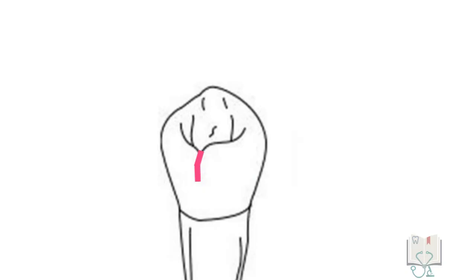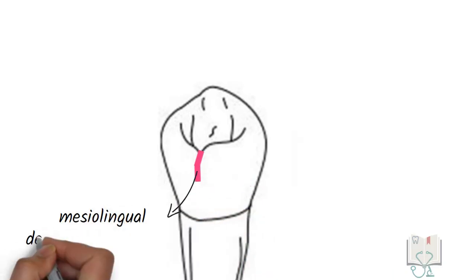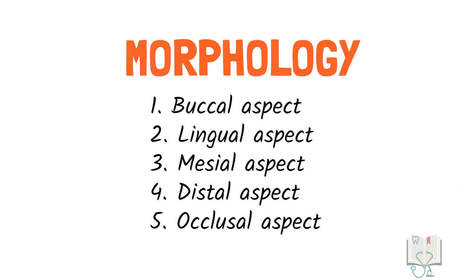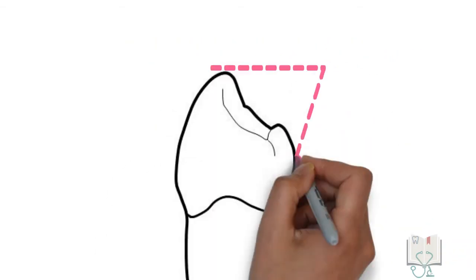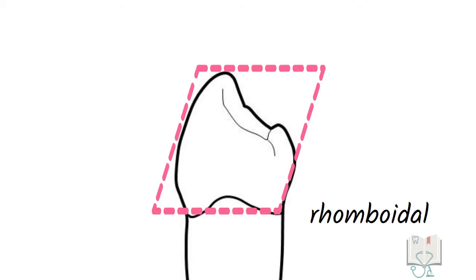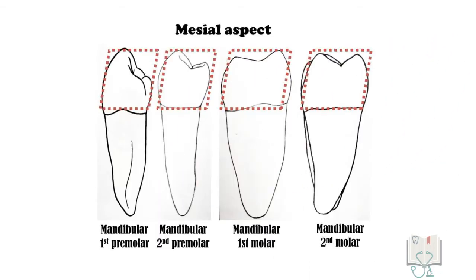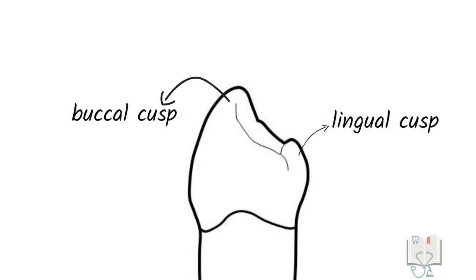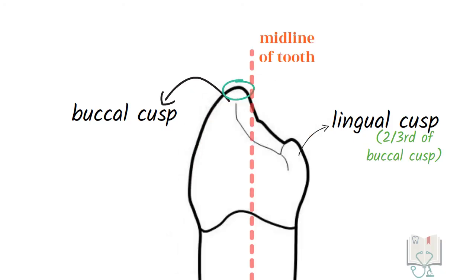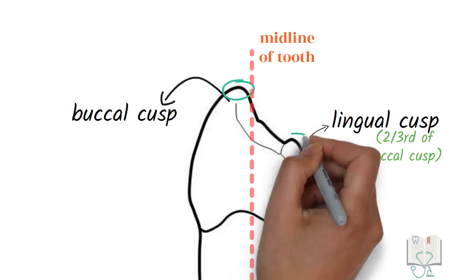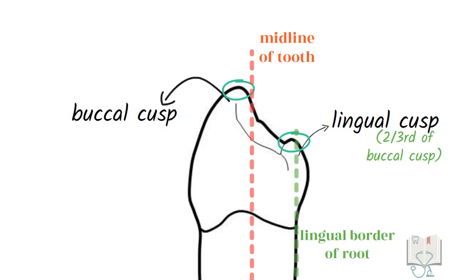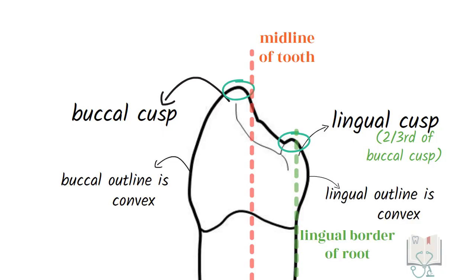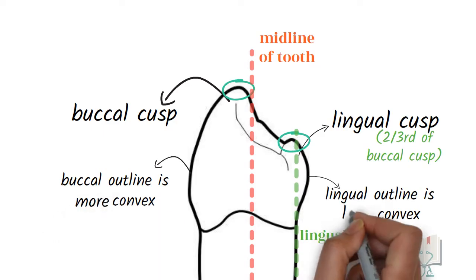On the lingual surface, a groove is seen running vertically between the mesial marginal ridge and lingual cusp, called the mesiolingual developmental groove. From the mesial aspect, the outline form of the crown is rhomboidal in shape, which is the same for all mandibular posterior teeth. Both cusps are visible: the well-developed buccal cusp and small lingual cusp. The lingual cusp is almost two-thirds the height of the buccal cusp. The buccal cusp tip almost reaches the midline of the tooth, whereas the lingual cusp tip is in line with the lingual border of the root. Both buccal and lingual outlines are convex, with the buccal outline being more convex.